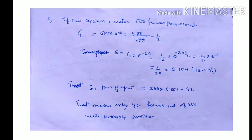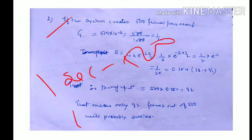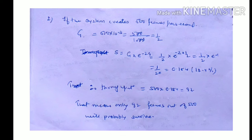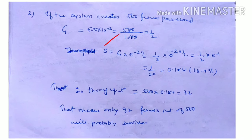For 500 frames per second: in 1 millisecond, G = 10⁻³ × 500 = 500/1000 = 0.5. Substituting G = 1/2 into the pure Aloha throughput formula S = G · e^(−2G), we get S ≈ 0.184.